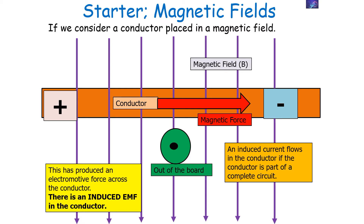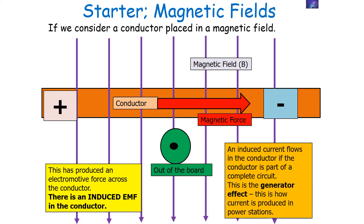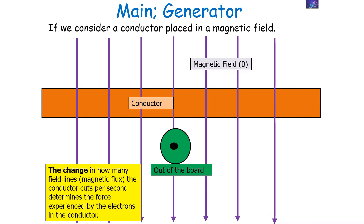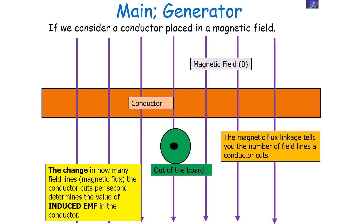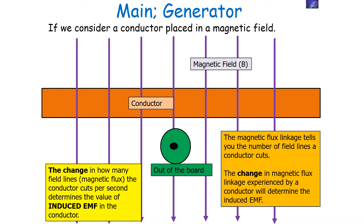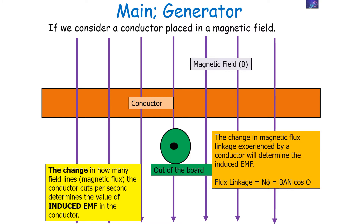An induced current flows in the conductor if it has an induced EMF and is part of a complete circuit. This is what we call the generator effect, and it's how current is produced in power stations. The change in how many field lines, or magnetic flux, the conductor cuts per second determines the force experienced by the electrons in the conductor. Therefore, the change in magnetic flux of the conductor every second determines the value of the induced EMF. The magnetic flux linkage tells you the number of field lines a conductor cuts, so the change in magnetic flux linkage experienced by a conductor will determine the induced EMF.